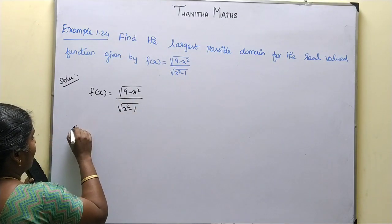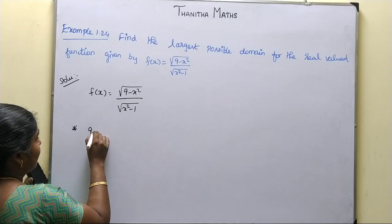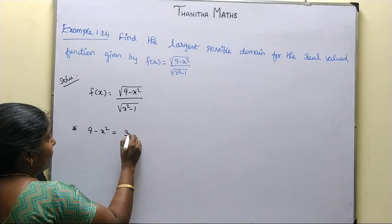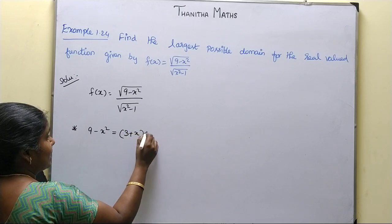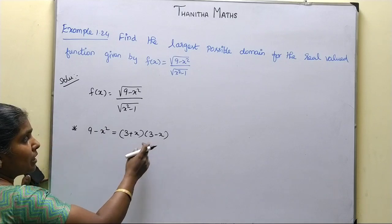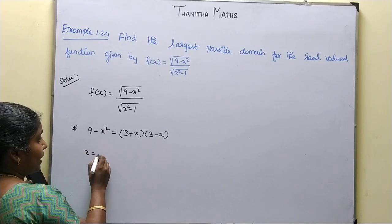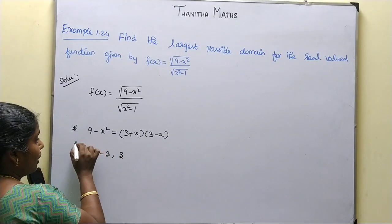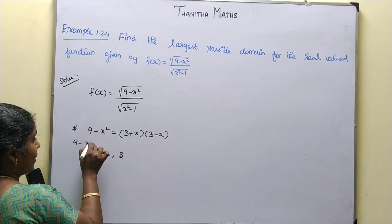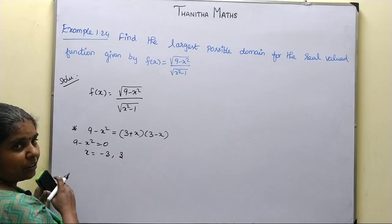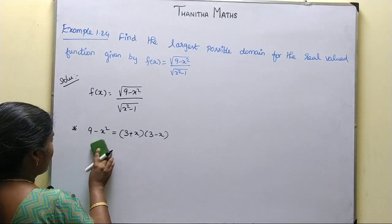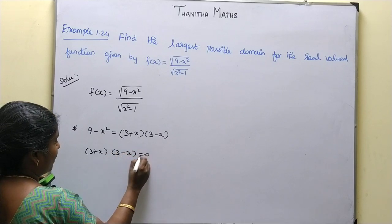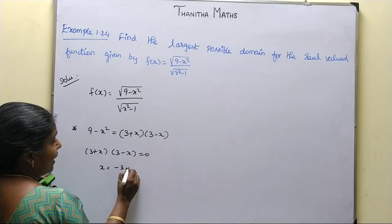So we will factorize. For the numerator: 9 - x² = (3 - x)(3 + x) = 0, which gives x = -3 and x = +3. We omit values where the numerator is negative.